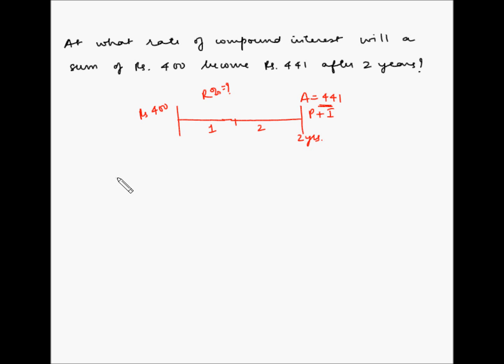So we know that for compound interest, amount is equal to principal multiplied by 1 plus R by 100 to the power of N. Now let's replace these with the actual values. So amount is 441, the principal is 400, R is unknown, and N is 2.